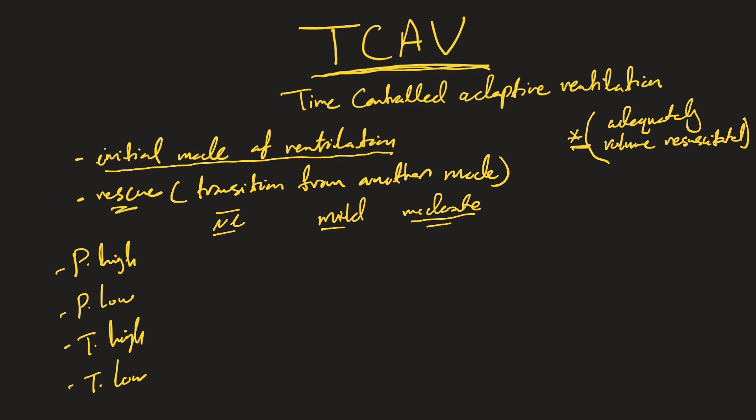These are initial starting values; after setting them you need to adjust based on breathing mechanics, which I'll cover in a separate video. For P-high: use 15–19 cmH2O for normal lungs, 20–24 cmH2O for mild, and 24–29 cmH2O for moderate to severe. You can use more than 29, especially with obese patients who may need higher pressures. P-low is zero for all categories.